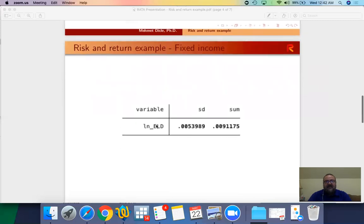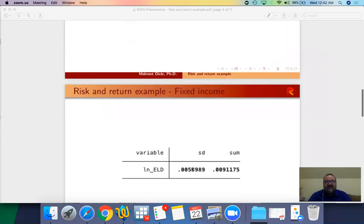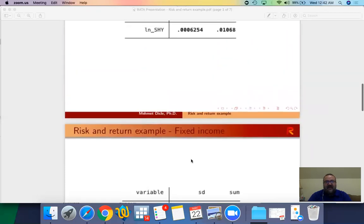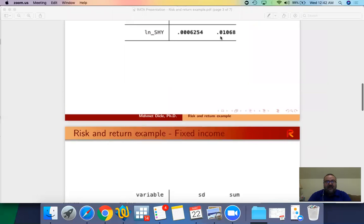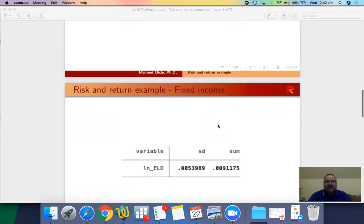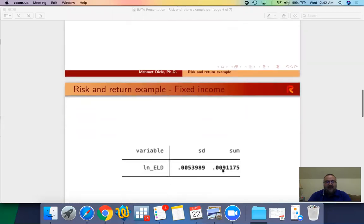Now this is another example of a fixed income. This is the emerging markets local currency ELD ETF, which has a standard deviation that's significantly higher than the SHY, whereas the total return is almost the same. One percent for SHY, this is about one percent or actually less than one percent.